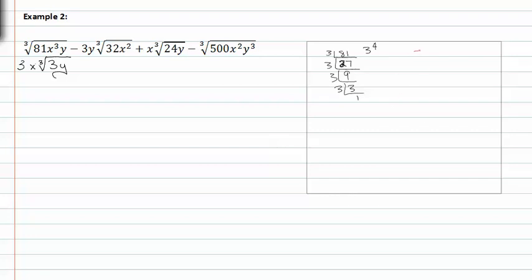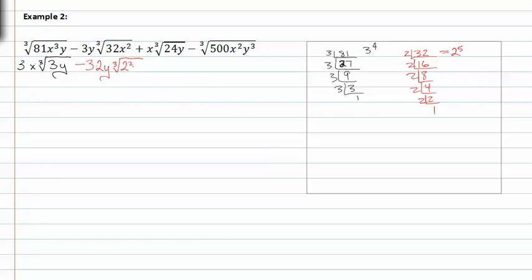Moving on to thirty two: divide by two to get sixteen, divide by two to get eight, divide by two to get four, divide by two to get two, divide by two to get one. So the prime factors of thirty two equal two to the fifth. When I rewrite this term I have negative three times two y, cubed root of two squared x squared.